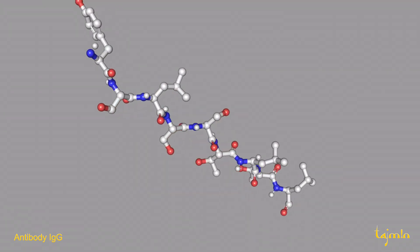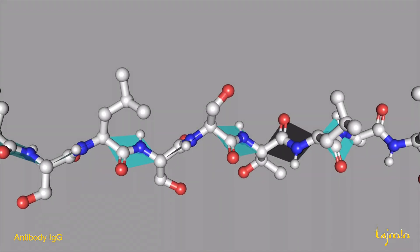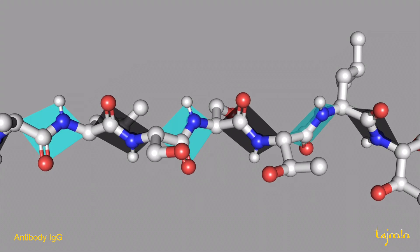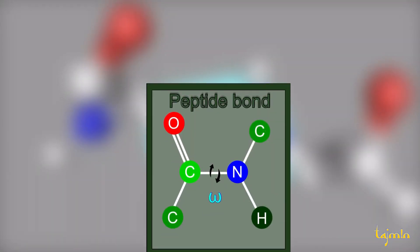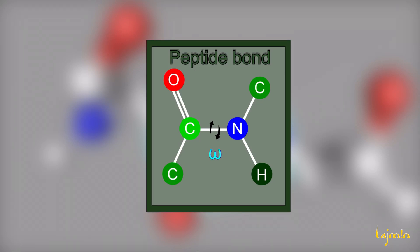The backbone of a protein is arranged in repeating units called peptide planes. Each peptide plane is formed by six atoms, including the peptide bond and two C-alpha carbon atoms.